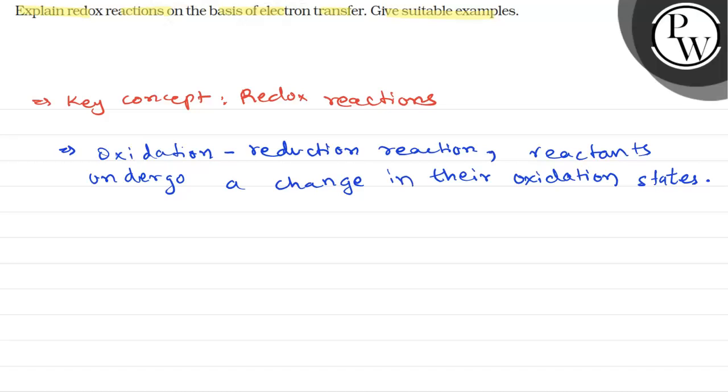The term redox is a short form for reduction oxidation. All redox reactions can be broken down into two different processes: a reduction process and an oxidation process.